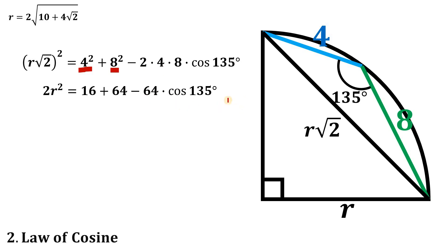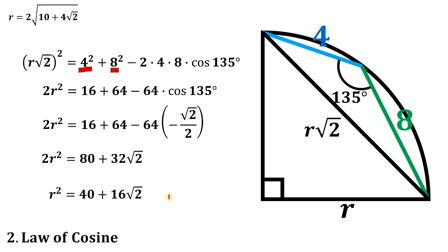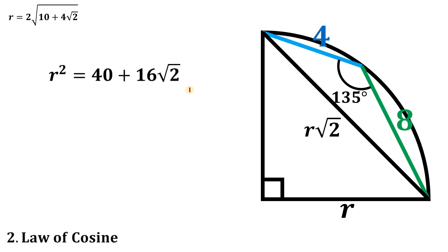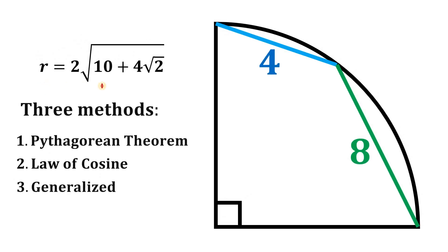Cosine of 135° is a second-quadrant multiple of 45°, so cos(135°) = −√2/2. Simplifying: 2r² = 16 + 64 − 64(−√2/2) = 80 + 32√2. Dividing by 2: r² = 40 + 16√2. Factoring out 4 and taking the square root gives the same result: r = 2√(10 + 4√2).